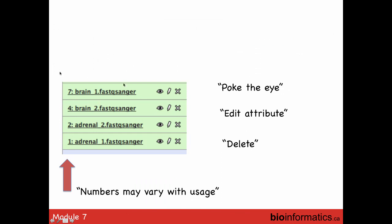Each command in your history always has three icons next to it: an eye, a pencil, and an X. The eye — I call it 'poke the eye' — lets you look at the data. The pencil lets you edit attributes: take notes about that step or rename input/output files. The X deletes a step. The numbers on the left side are just a chronological order of your steps — if steps failed they may not be sequential.